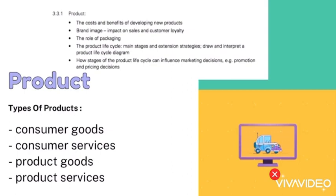Now, product — there are four types of products: consumer goods, consumer services, producer goods, and producer services. We're going to look at each of them.